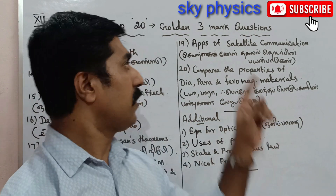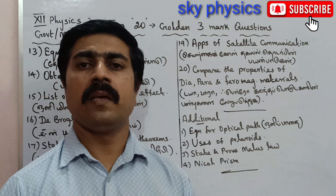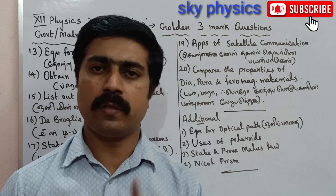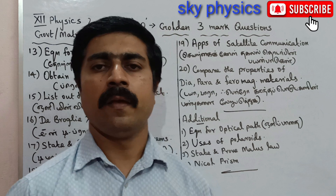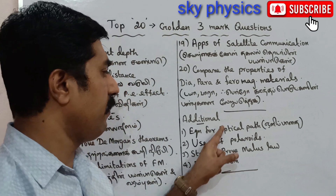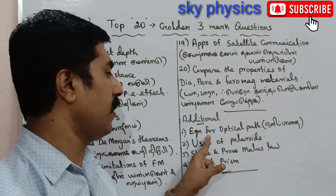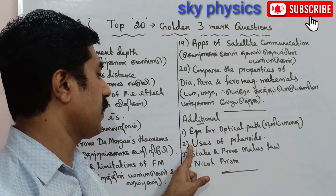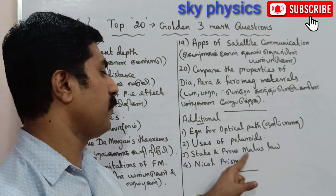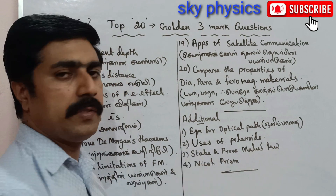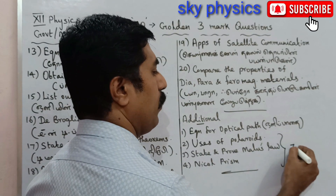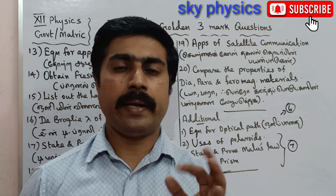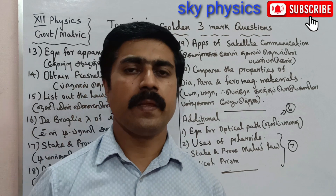So, these are 20 questions — 3-mark top 20 golden questions. Compulsory and important problems will be video uploaded for Tamil medium and English medium students. Updates include the 6th unit equation for optical path. This covers average and top students. Practice all of these. All the best! Thank you.